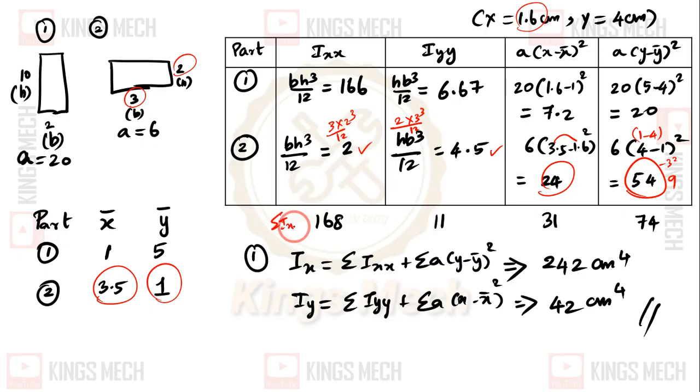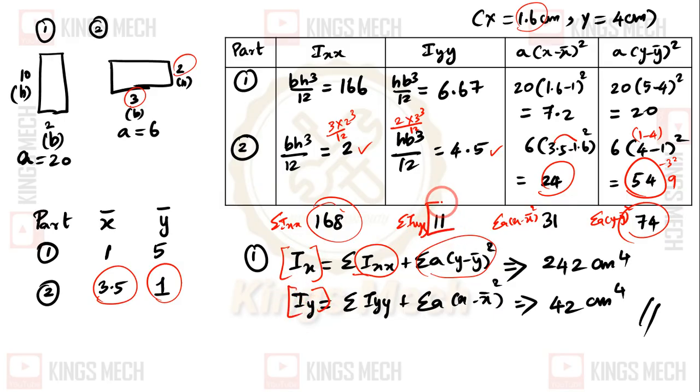Now the final addition. Summation of Ixx, summation of Iyy, summation of A into x minus x̄ squared, and summation of A into y minus ȳ squared. Capital Ix is summation Ixx plus summation of A into y minus ȳ squared. Adding this value. Iyy plus summation of A into x minus x̄ squared. We will get 242 cm to the power 4. The answer will be coming in cm to the power 4 because the given dimensions are in cm.